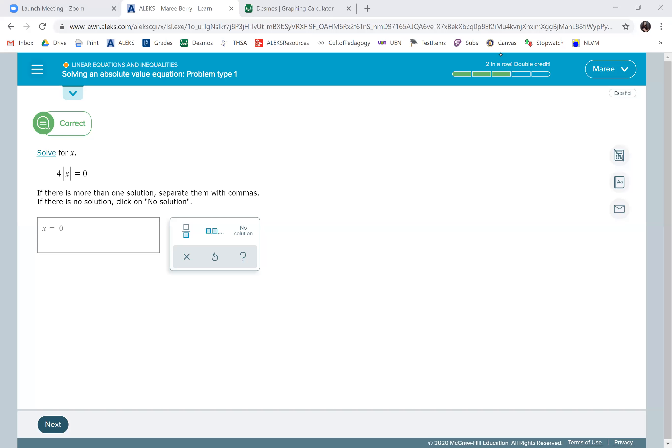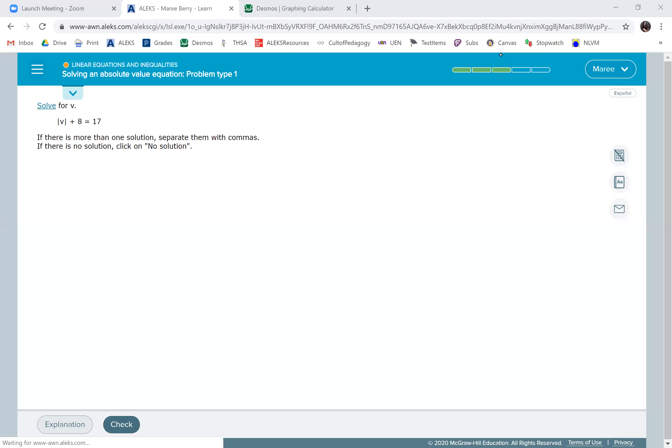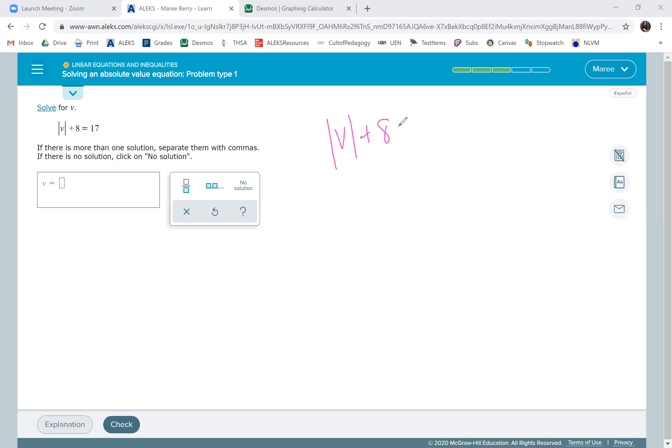Okay, one more example. We have the absolute value of V plus eight equals 17. And this is kind of like the example that they gave us. We want to subtract eight and get the absolute value of V equals nine.